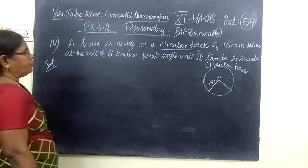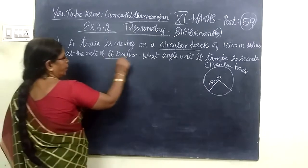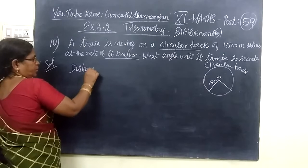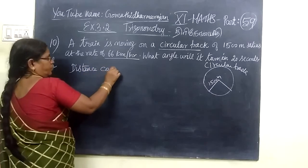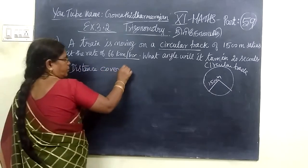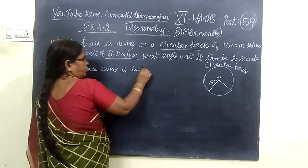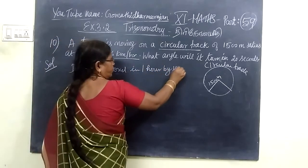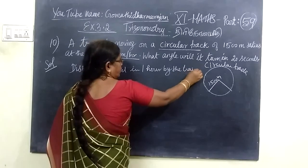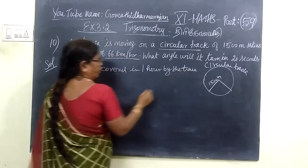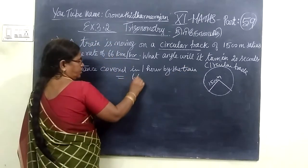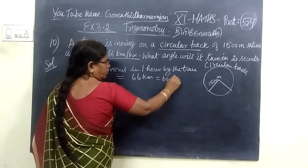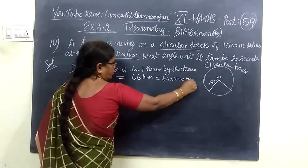Actual speed of the train is 66 kilometers per hour. That is, distance covered meaning in 1 hour by the train. Distance covered by the train in 1 hour is equal to 66 kilometers, that is 66,000 meters.